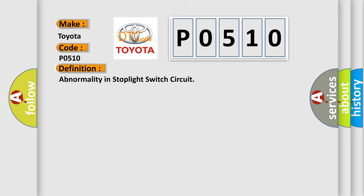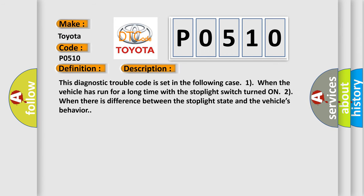And now this is a short description of this DTC code. This diagnostic trouble code is set in the following cases: 1, when the vehicle has run for a long time with the stoplight switch turned on, and 2, when there is difference between the stoplight state and the vehicle's behavior. This diagnostic error occurs most often in these cases.